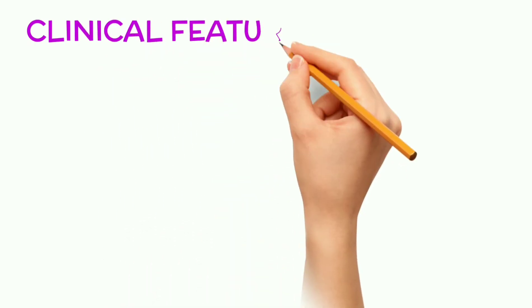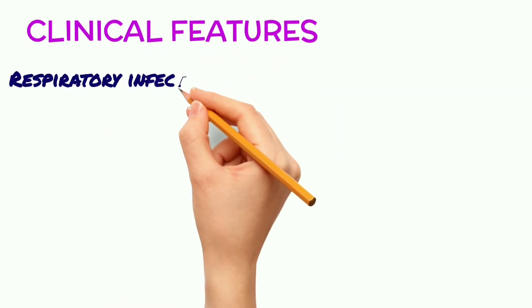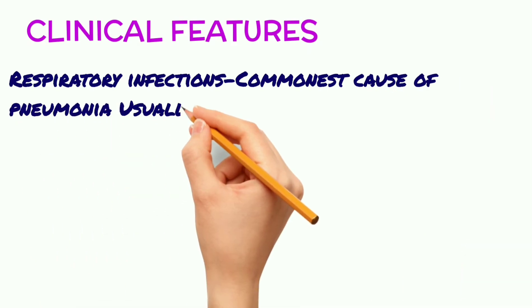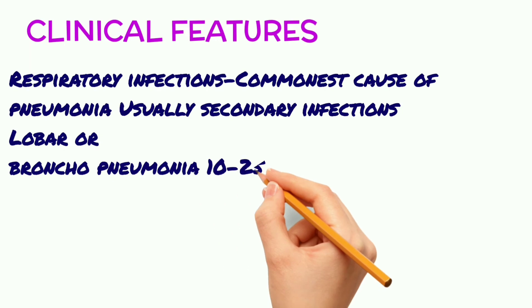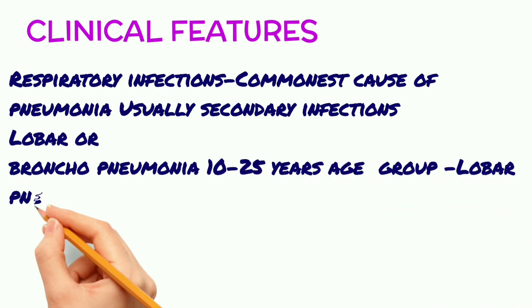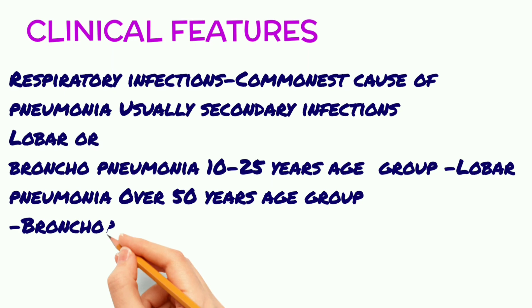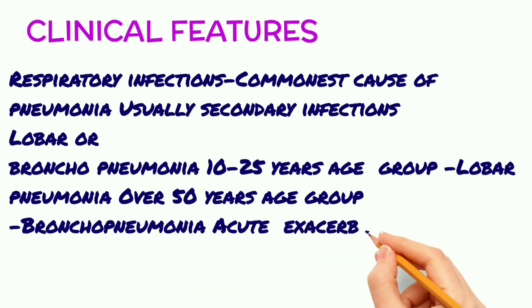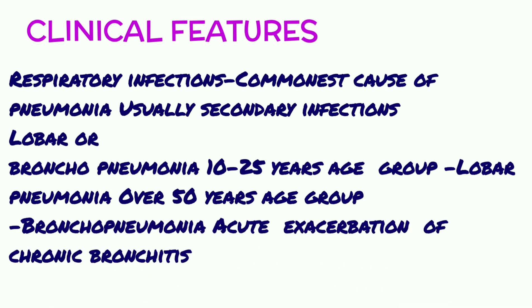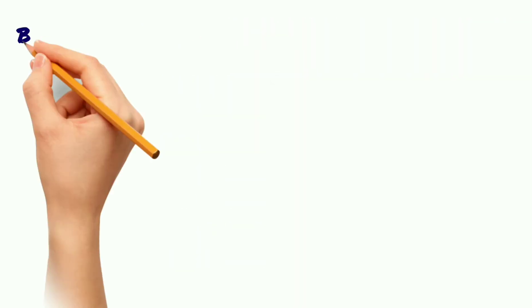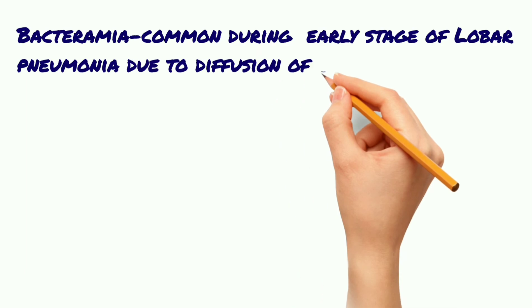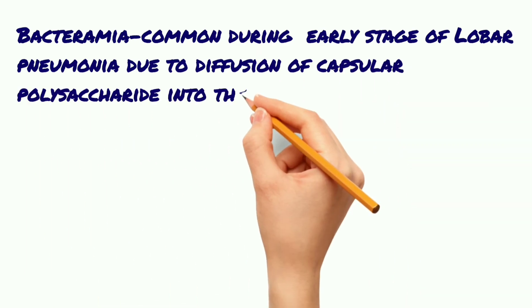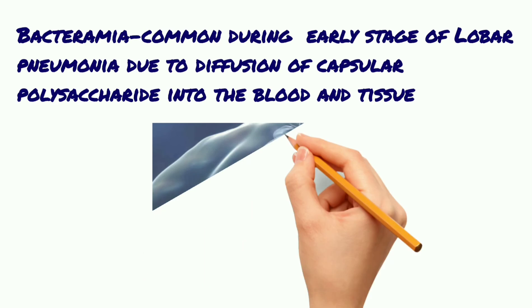Now let's start with the clinical features. First is respiratory infections — it is the commonest cause of pneumonia, usually as a secondary infection. The 10 to 25 years age group shows lobar pneumonia, while over 50 years shows bronchopneumonia. There is also acute exacerbation of chronic bronchitis. Bacteremia is common during the early stage of lobar pneumonia due to diffusion of capsular polysaccharide into the blood and tissues.